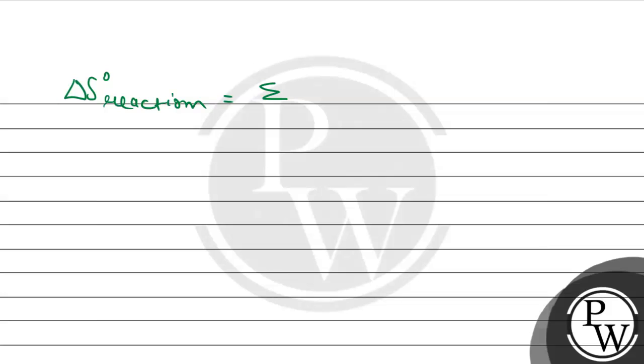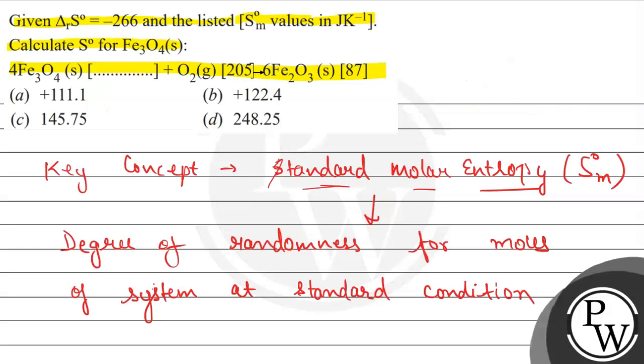This summation represents the sum of the products minus the sum of the standard molar entropies of the reactants. This was our standard entropy for products and this is our standard entropy for the reactants.